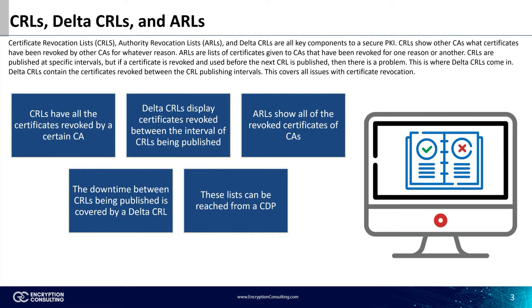Authority revocation lists, or ARLs, are lists containing certificates of CAs that have since been revoked. All of these types of lists are published to CRL distribution points, or CDPs, by each of the CAs in the PKI.